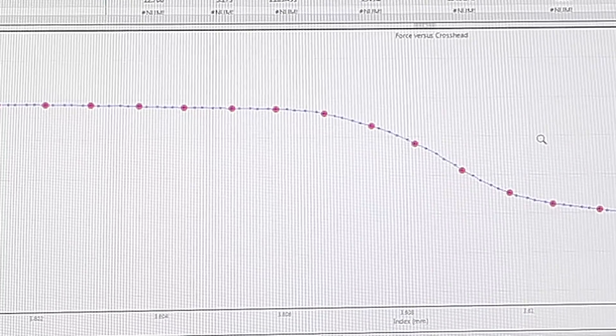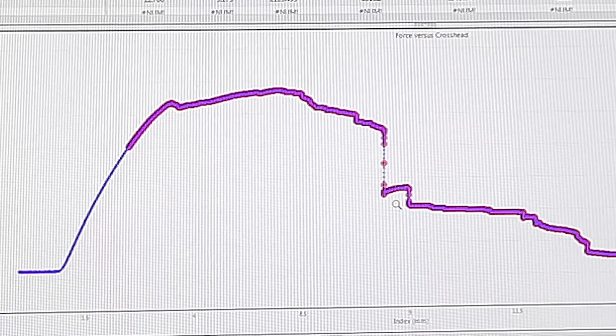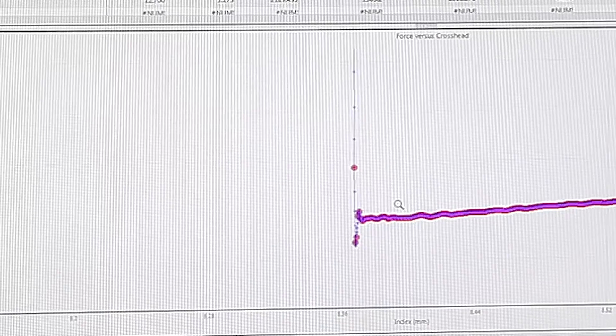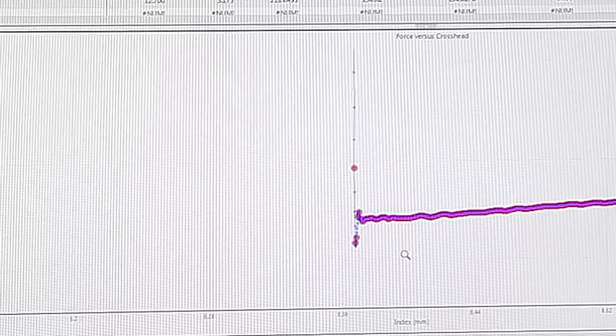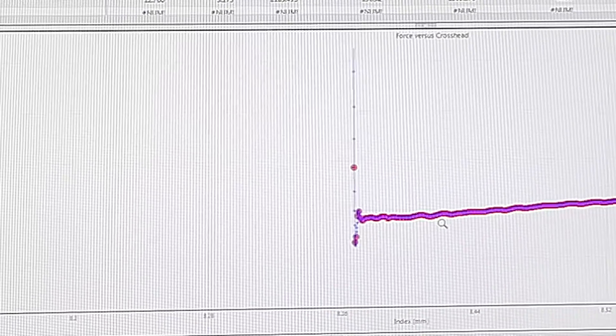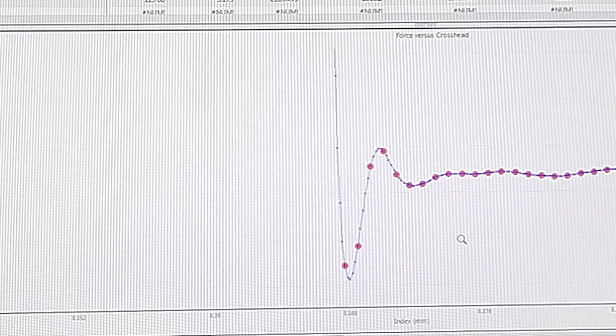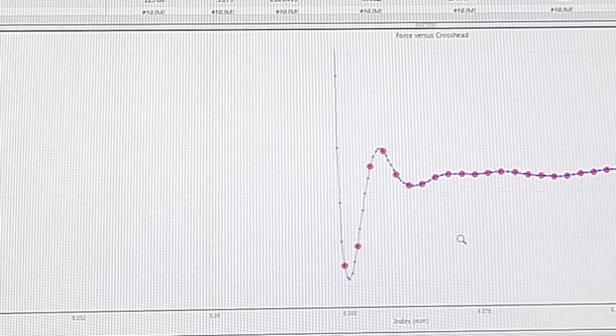However, when we look at a fast failure such as this one right here, we do find new information in that data. If we zoom in on this, we can see new peaks and valleys and get a better idea as to how the material is failing.